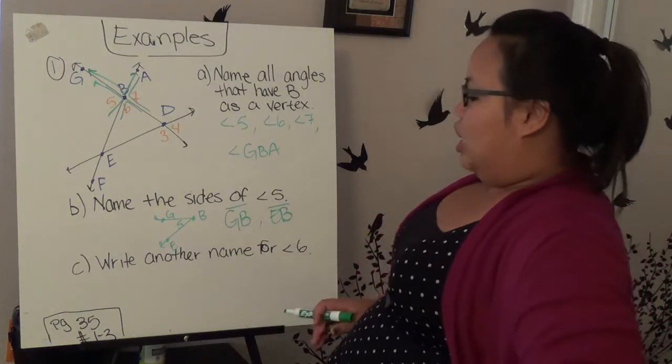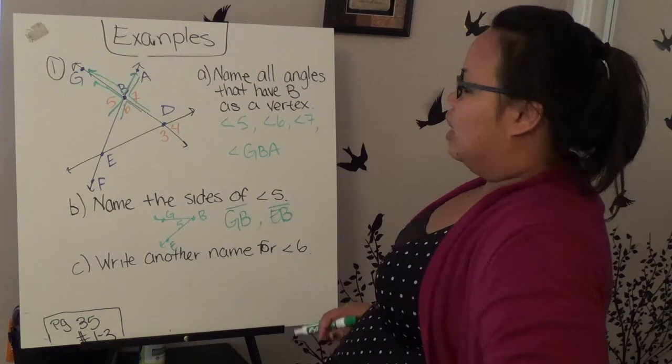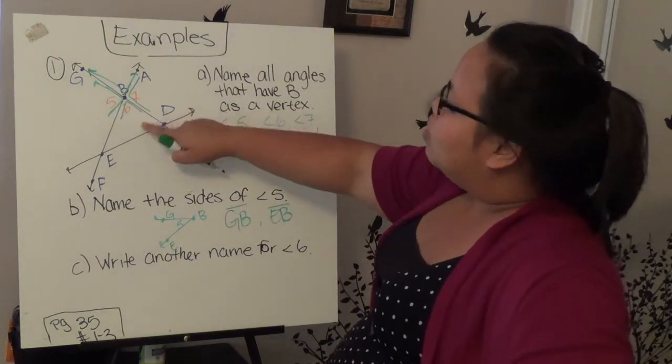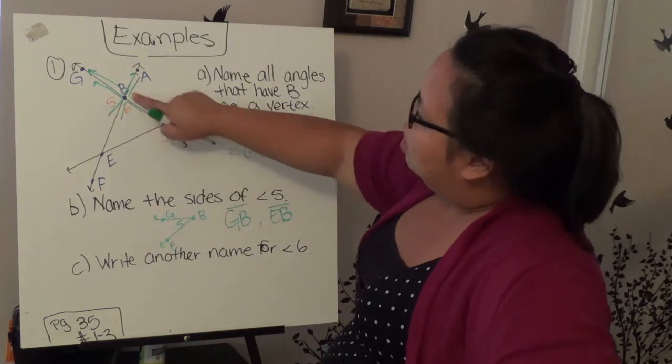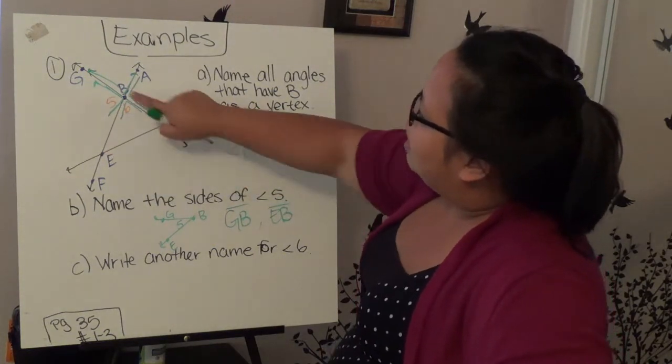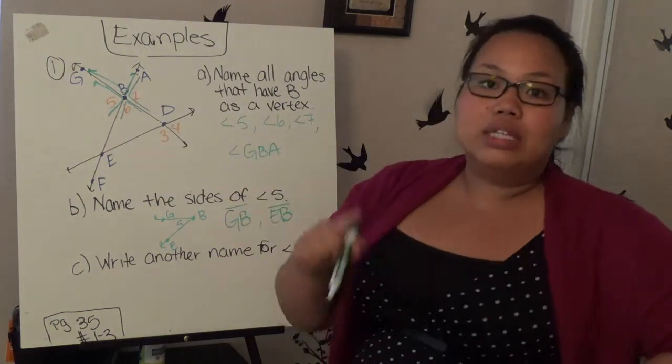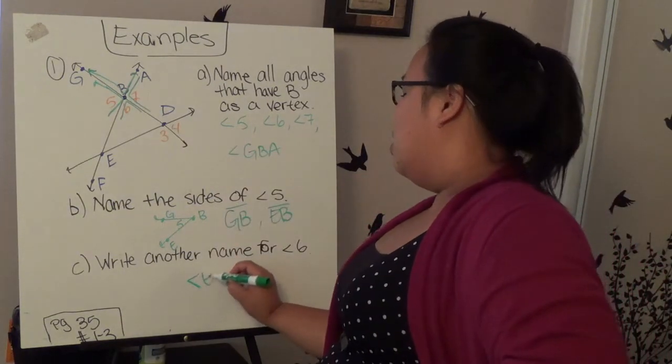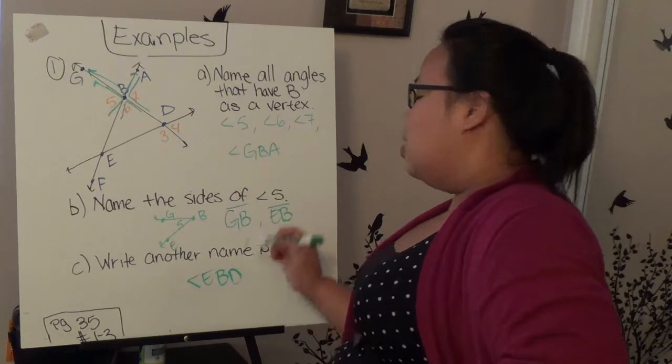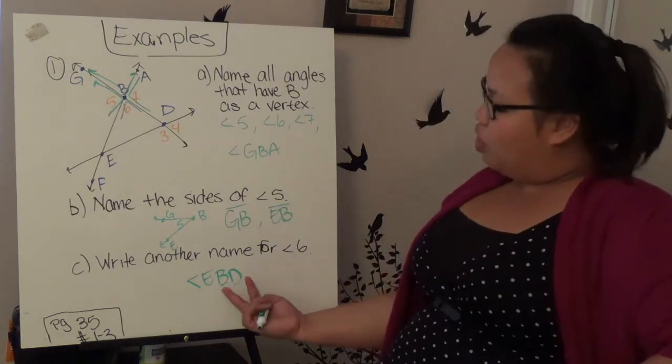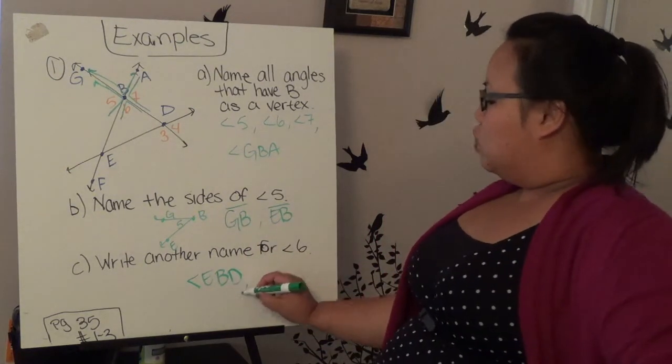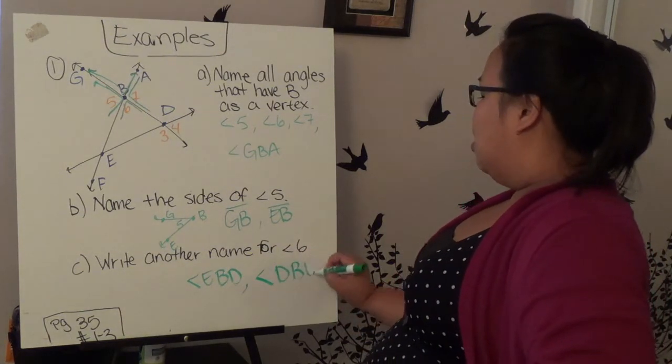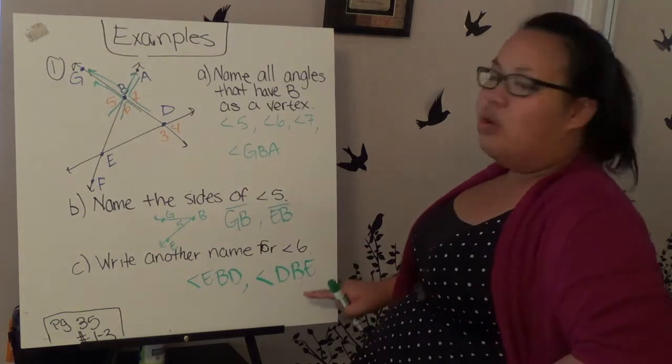And the last one is to write another name for angle 6. So here's angle 6. So instead of 6, I can use the three letters EBD that makes it as long as the vertex is in the middle. So I can easily name it EBD. What's another way I can name it? I can reverse D and E. I can also say angle D, B, E. But B has to always be in the middle.